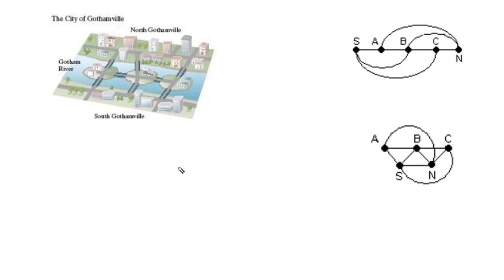Again, it doesn't really matter. I mean, we can use their labeling, meaning let this equal N, this equal S, this island is A, this island is B, and this island is C.